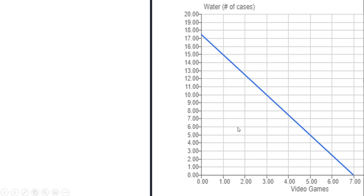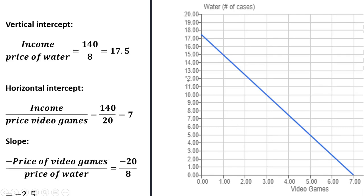We could graph Toby's budget constraint. What I like to do when graphing budget constraints is get the vertical intercept and the horizontal intercept. The vertical intercept — where the budget constraint touches the y-axis, where we're measuring water in number of cases — is the amount of income Toby has divided by the price of water, so that's 17.5. The horizontal intercept, where we're measuring number of video games, is 7: take the income, divide it by the price of video games, and we get 7.